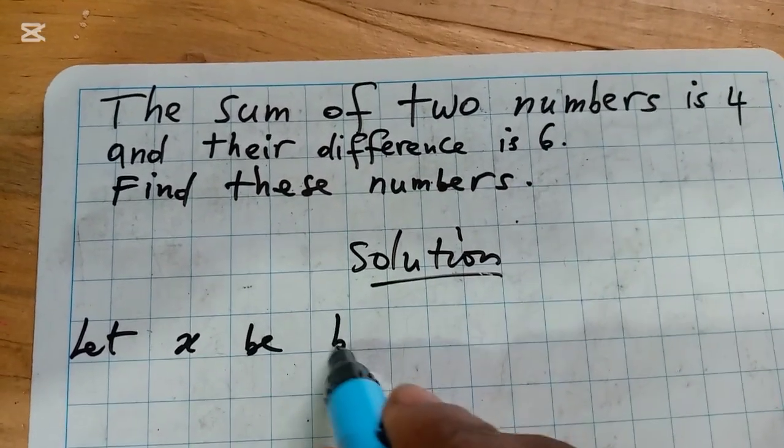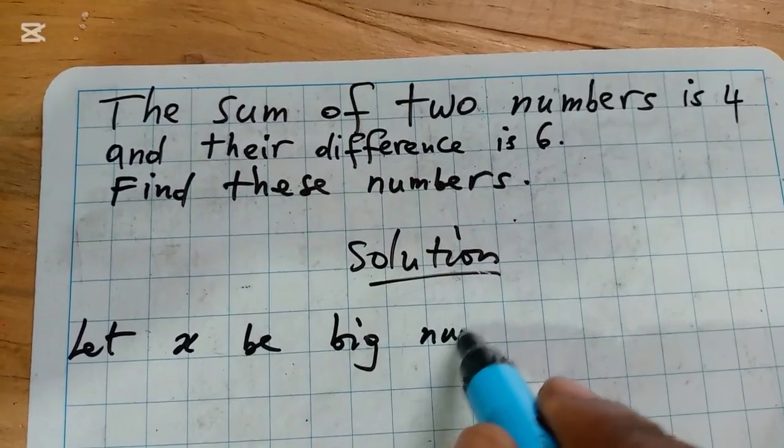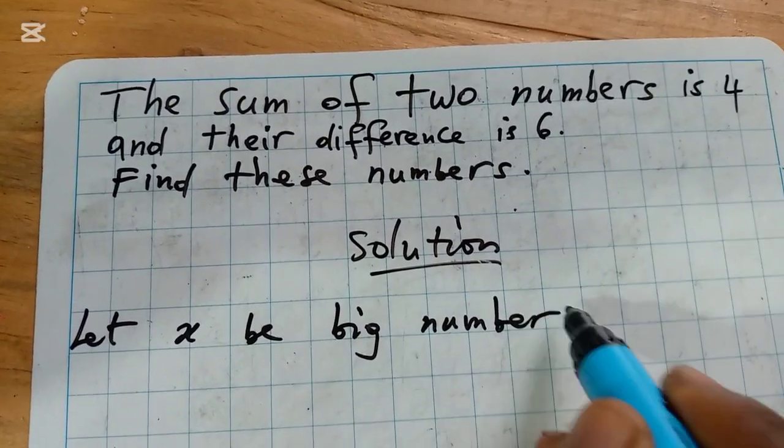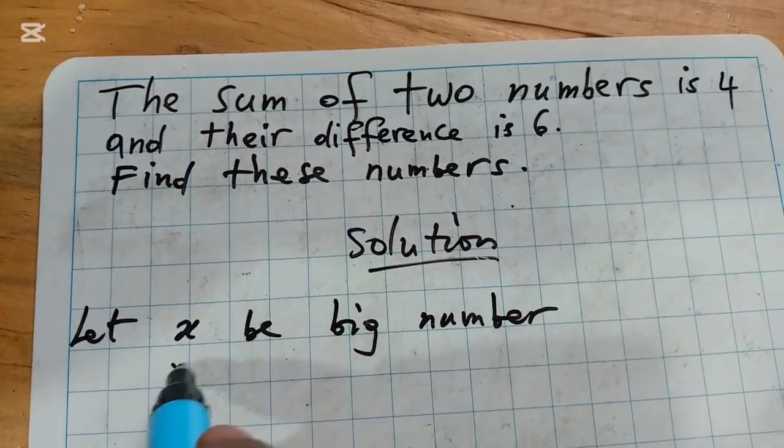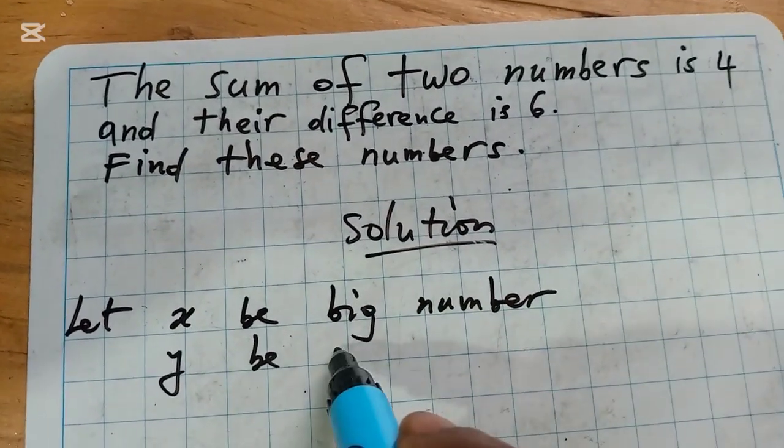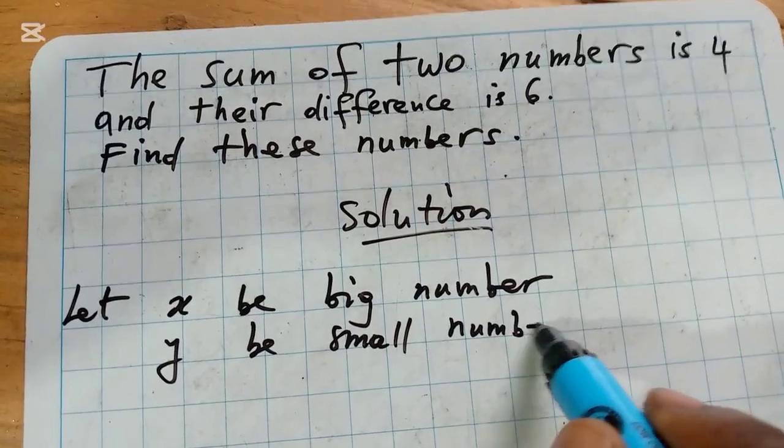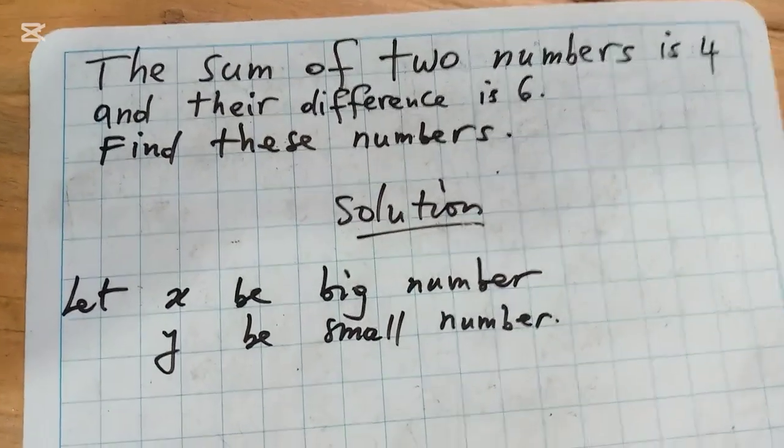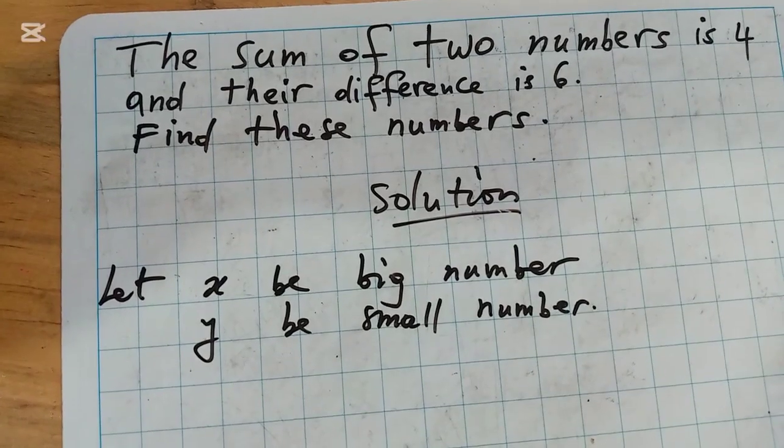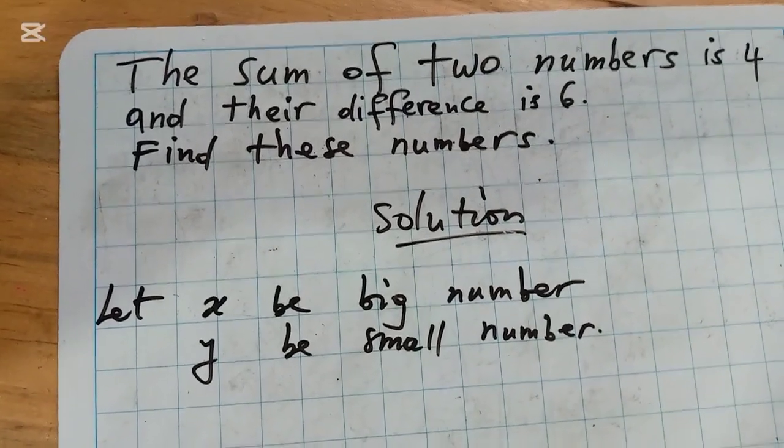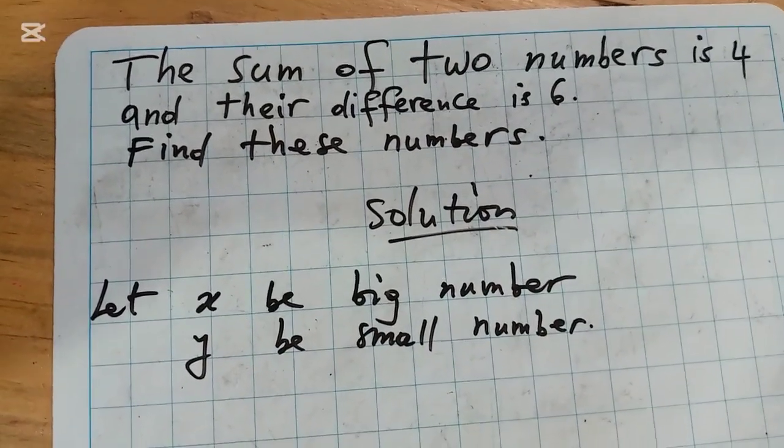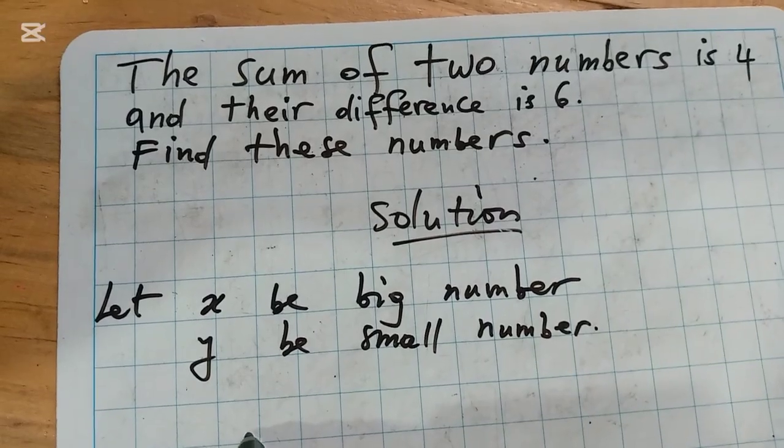We have two numbers. The sum of the two numbers means if we take X and add Y, this is equal to 4.